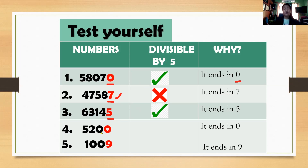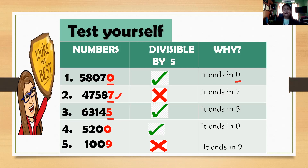How about number 4? It ends with 0, so it is divisible by 5. How about number 5? It ends with 9, so this is not divisible by 5. Very good.